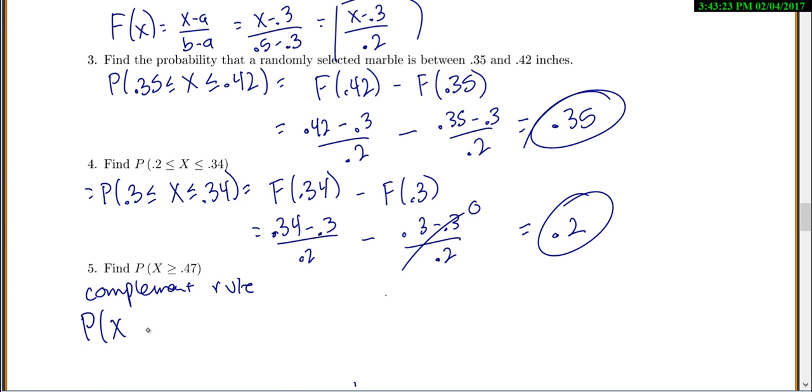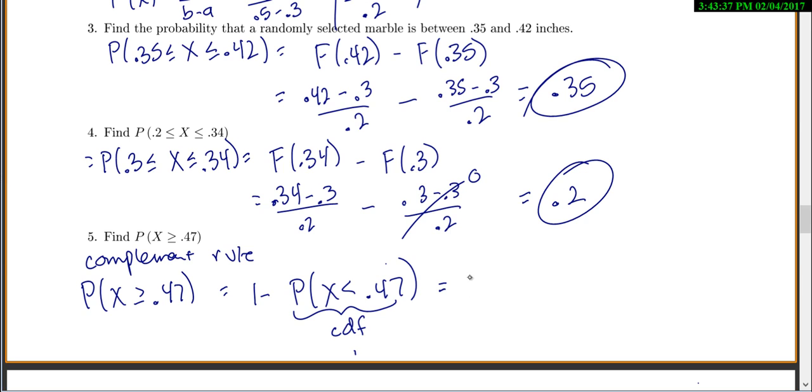So the probability that x is greater than or equal to 0.47 is 1 minus the probability that x is less than 0.47. And this would be equal to your CDF because it's a less than probability now. So we get 1 minus, I guess I should write it out, f of 0.47. This is 1 minus 0.47 minus 0.3 over 0.2, so this all gives me 0.15.